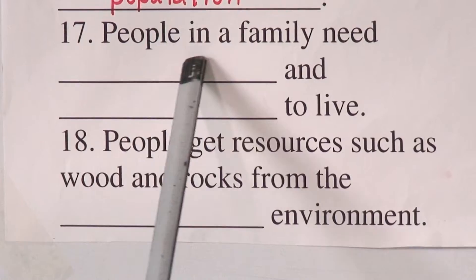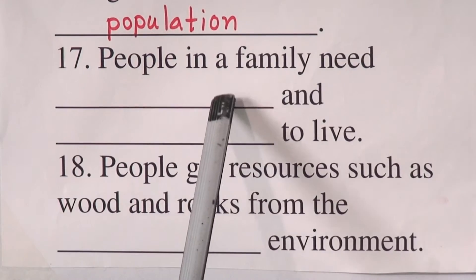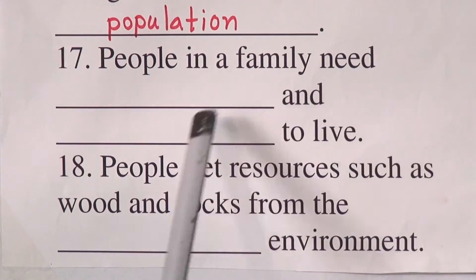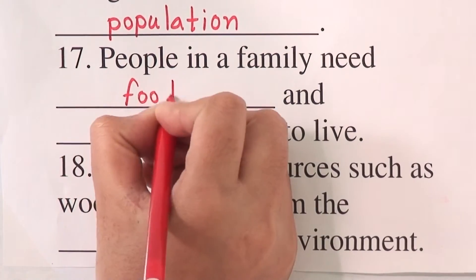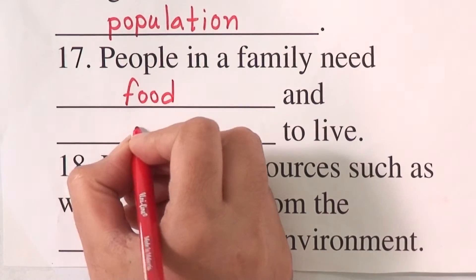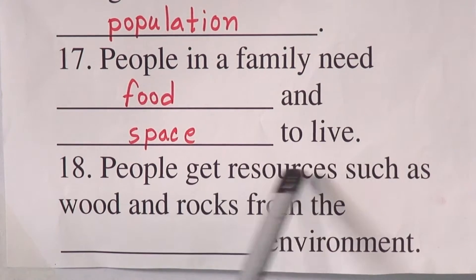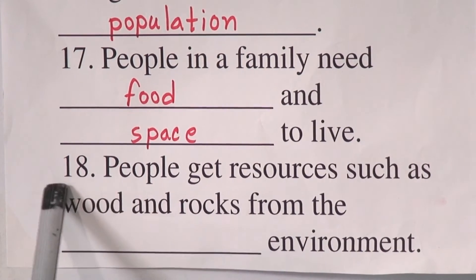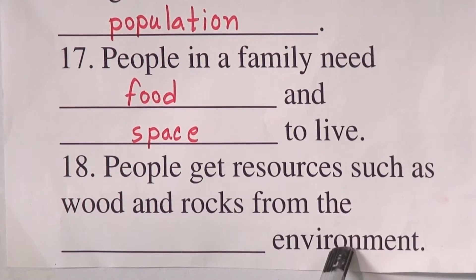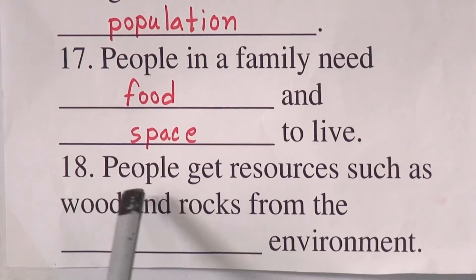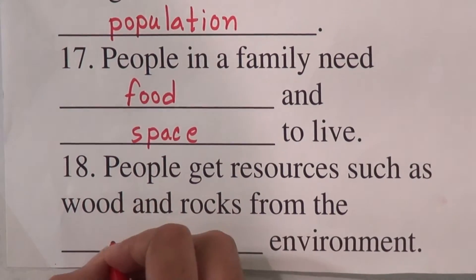Number 17: people in a family need — and — to live. The answer is food and space. So we will write here: food and space. Number 18: people get resources such as food and rocks from the — environment. The answer is natural. People get resources from the natural environment, so we will write here: natural.